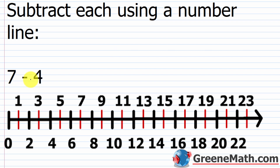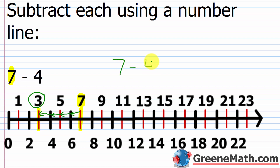We have 7 minus 4. The first thing you do is start at the leftmost number on the number line — that's 7. When we add, we move to the right. But since we're subtracting 4, we go to the left by 4 units. So we go 1, 2, 3, 4 units to the left, and that puts us at 3. So 7 minus 4 equals 3.